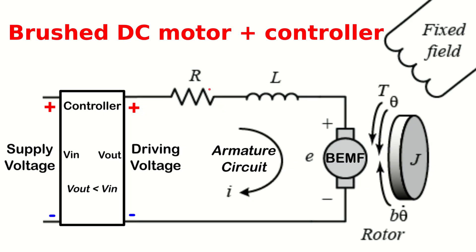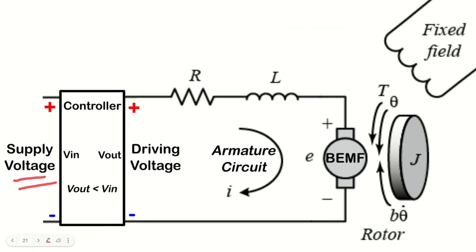This is a diagram of a brushed DC motor. We have the supply voltage, which is the battery for example, and the controller, which determines what is the required driving voltage to reach the commanded current.